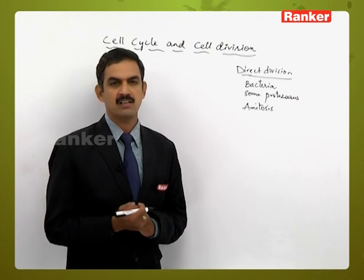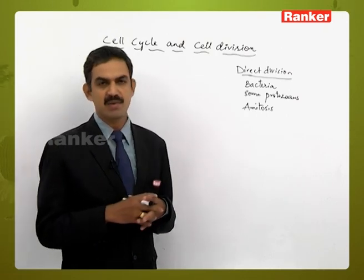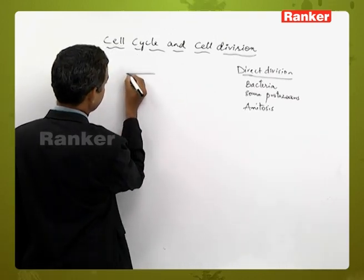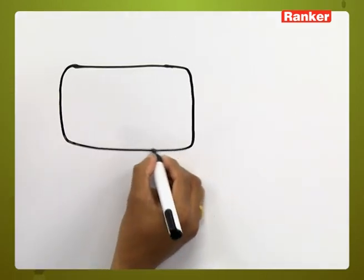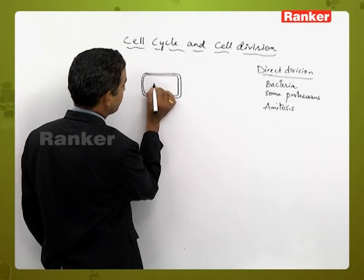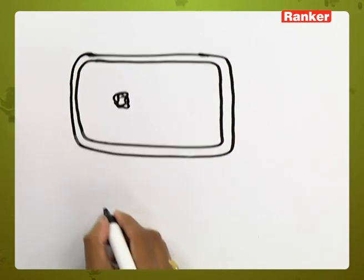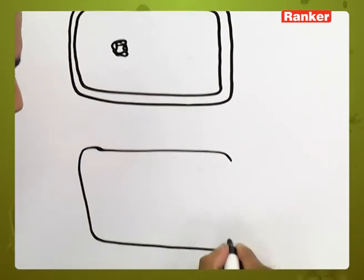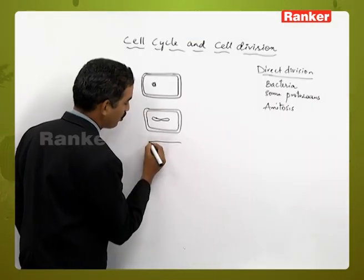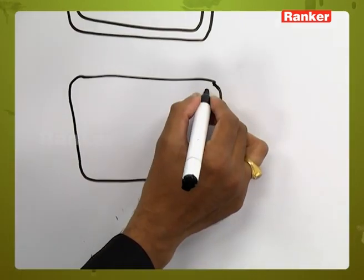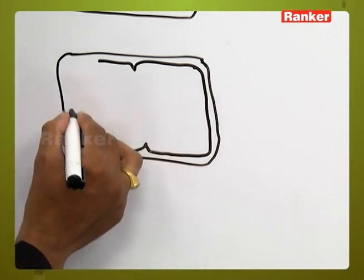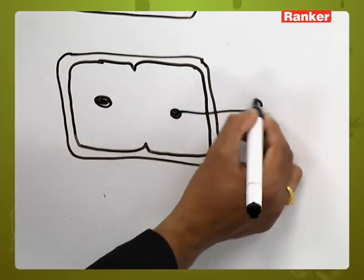In bacteria, amitosis occurs by a process called binary fission. Being a unicellular organism, a constriction appears in the cytoplasm and in the cell wall, moving towards the center in a centripetal manner, leading to the formation of two daughter cells. The nucleus first elongates, then divides into two daughter nuclei within the bacterial cell. This constriction occurs at the place of mesosomes.